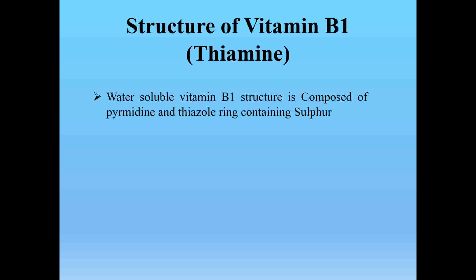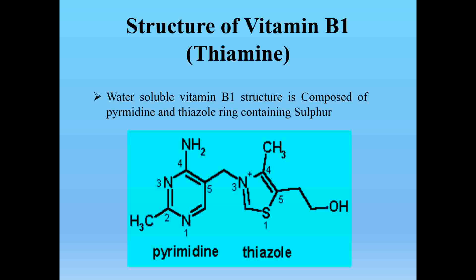The structure of thiamine is composed of a pyrimidine ring and a thiazol ring which are connected together. The thiazol ring contains a sulfur atom in its structure. Thiamine is a water-soluble vitamin, and its metabolism and availability occur through the aqueous environment inside the human body.